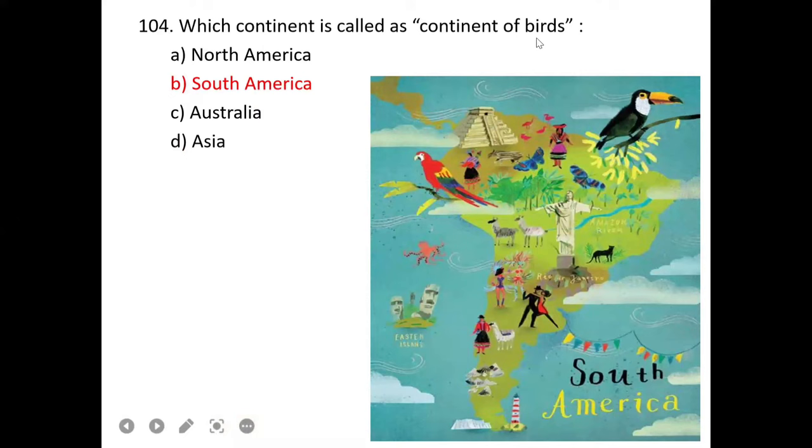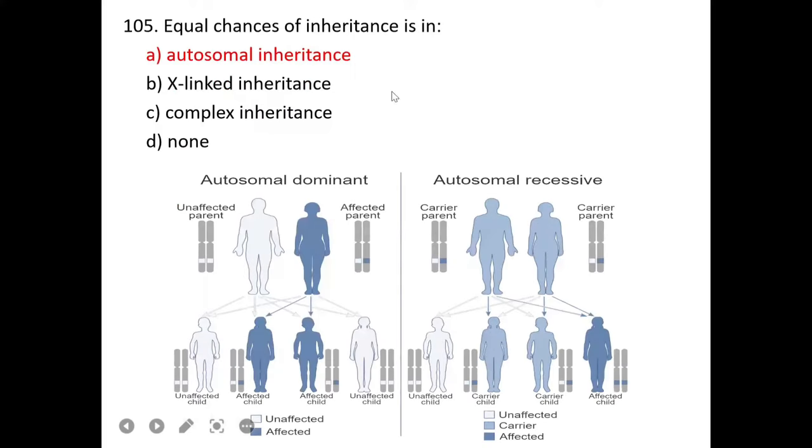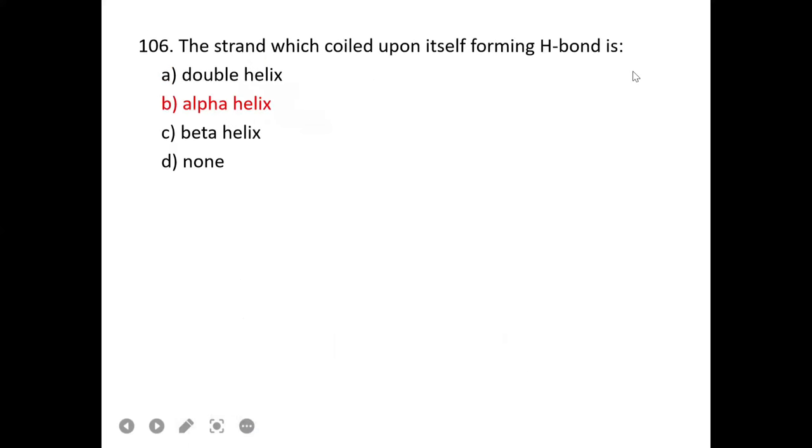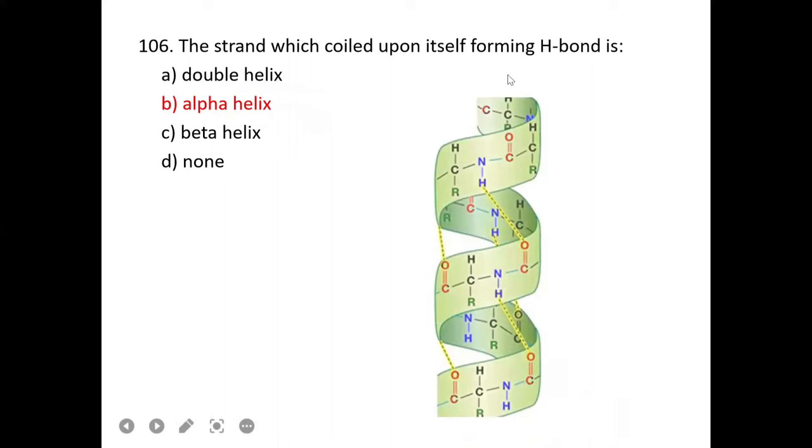The strand which coiled upon itself forming hydrogen bonds is alpha helix. Immediate transcript after transcription: right after transcription, we get pre-messenger RNA which contains introns. After splicing, it converts into mature messenger RNA. B is correct.